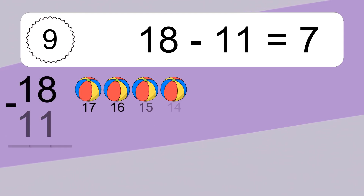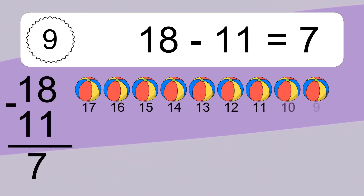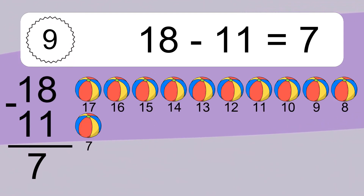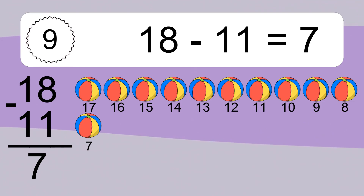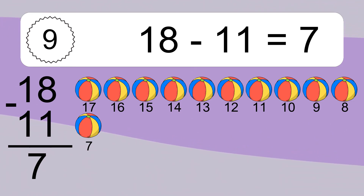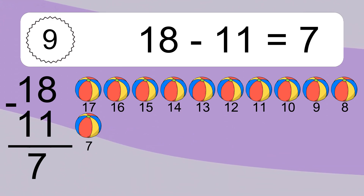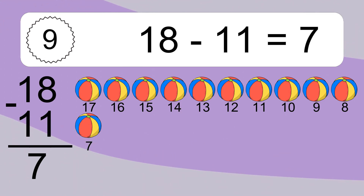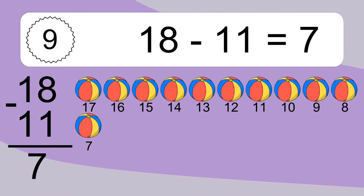18 minus 11 equals what? 18 minus 11 equals 7. Let's count it: 17, 16, 15, 14, 13, 12, 11, 10, 9, 8, 7.